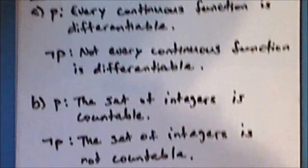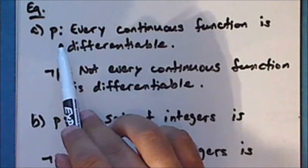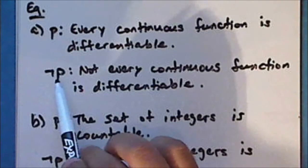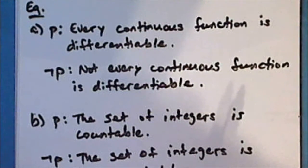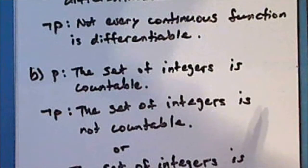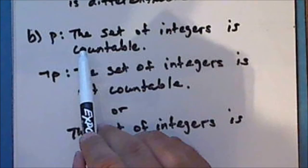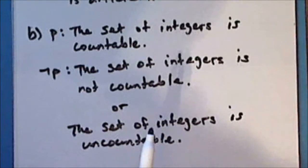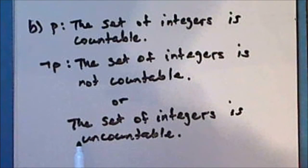In the first example, the statement P — every continuous function is differentiable — is false. So the negation of P — not every continuous function is differentiable — is true. In the second example, the statement P — the set of integers is countable — is true. So the negation of P — that the set of integers is uncountable — is false.